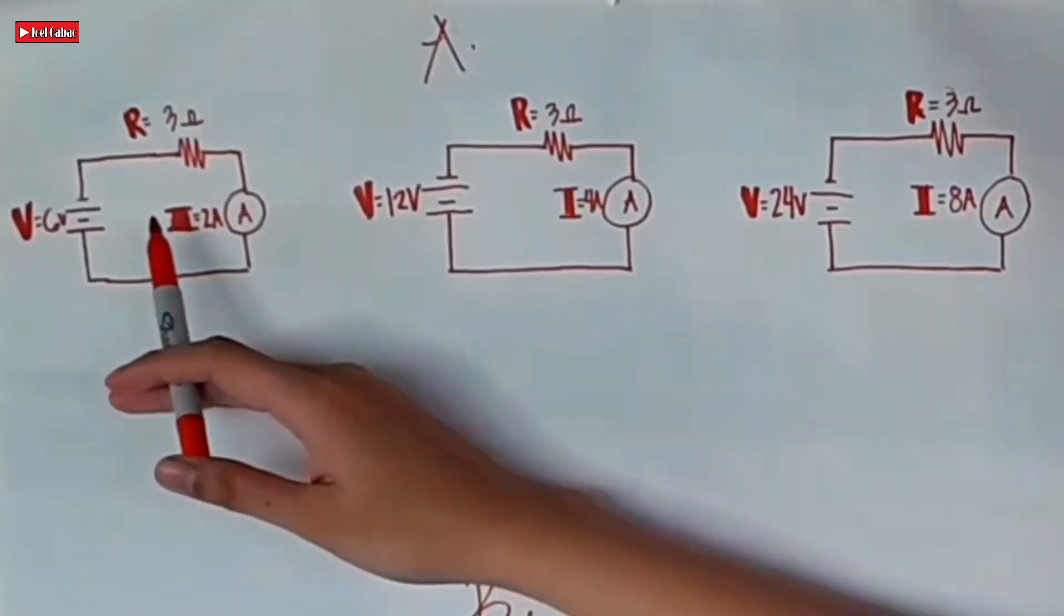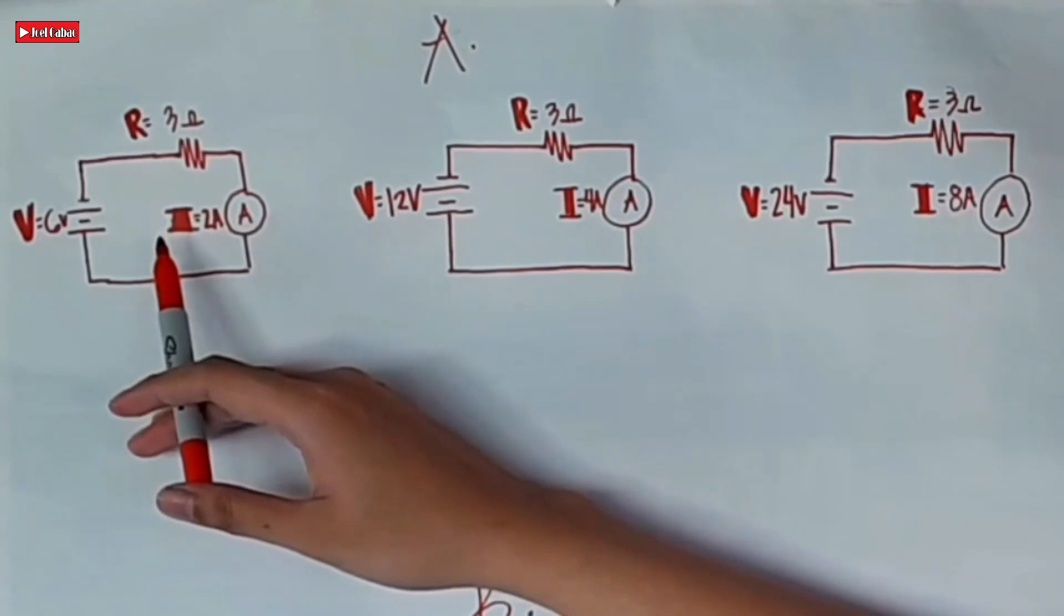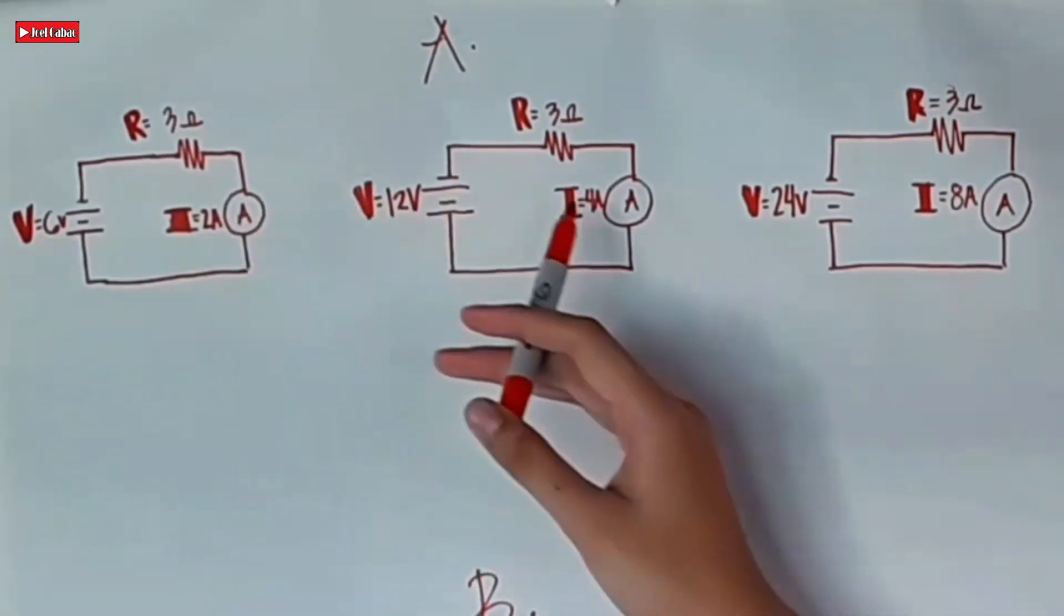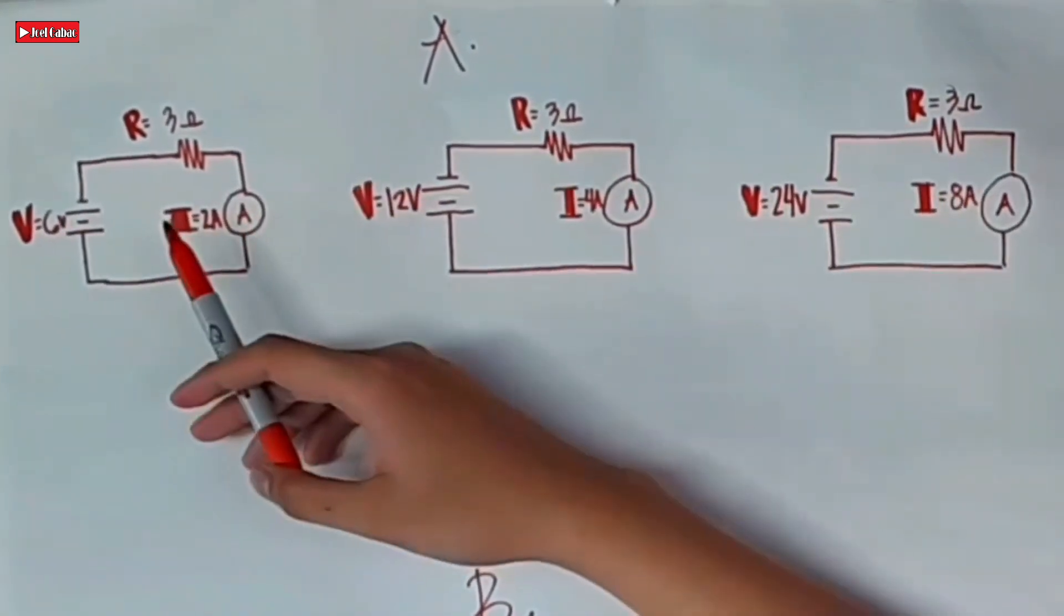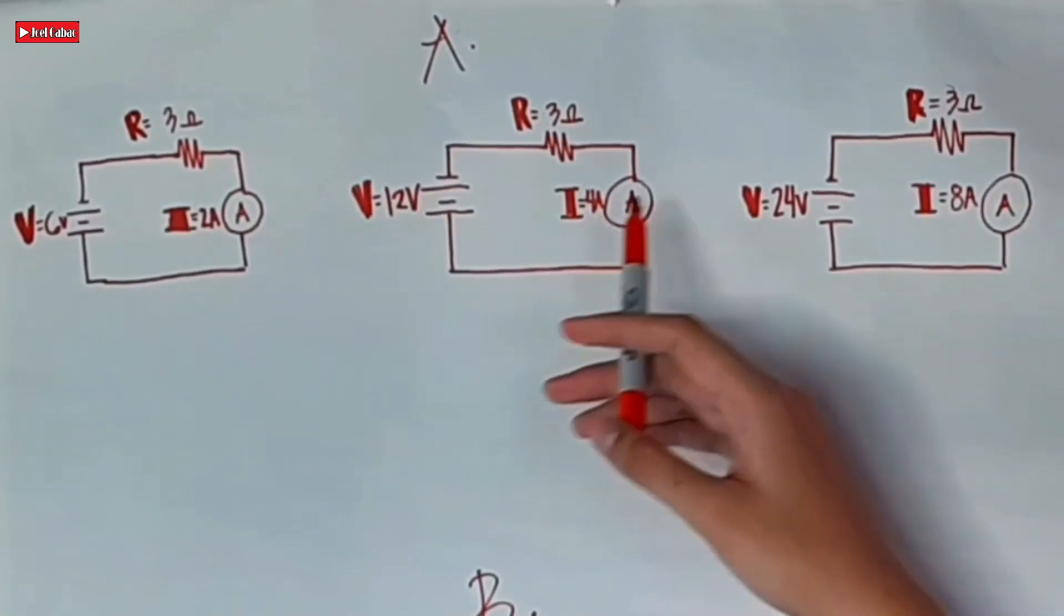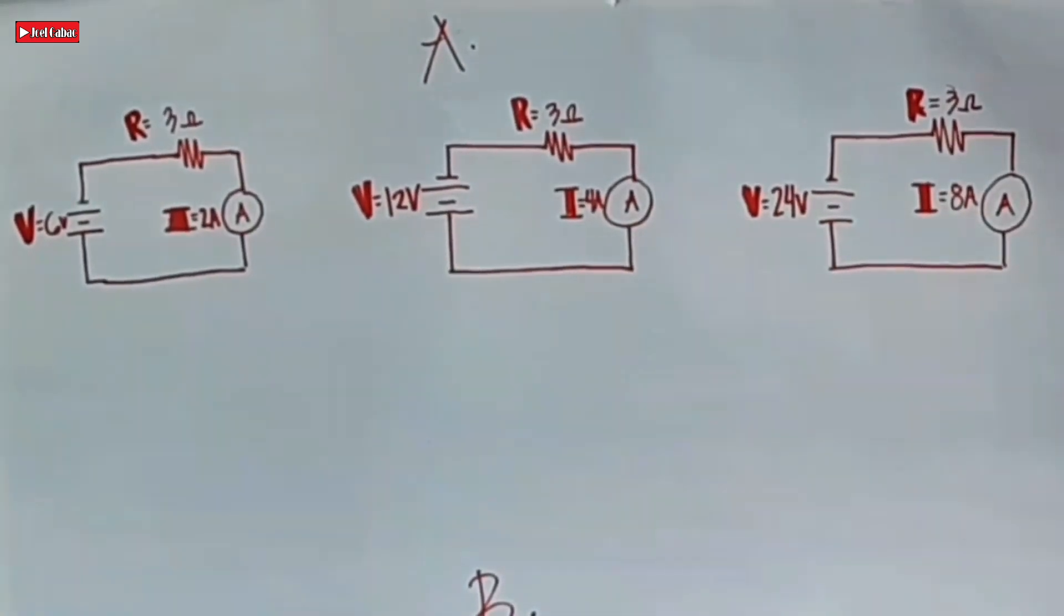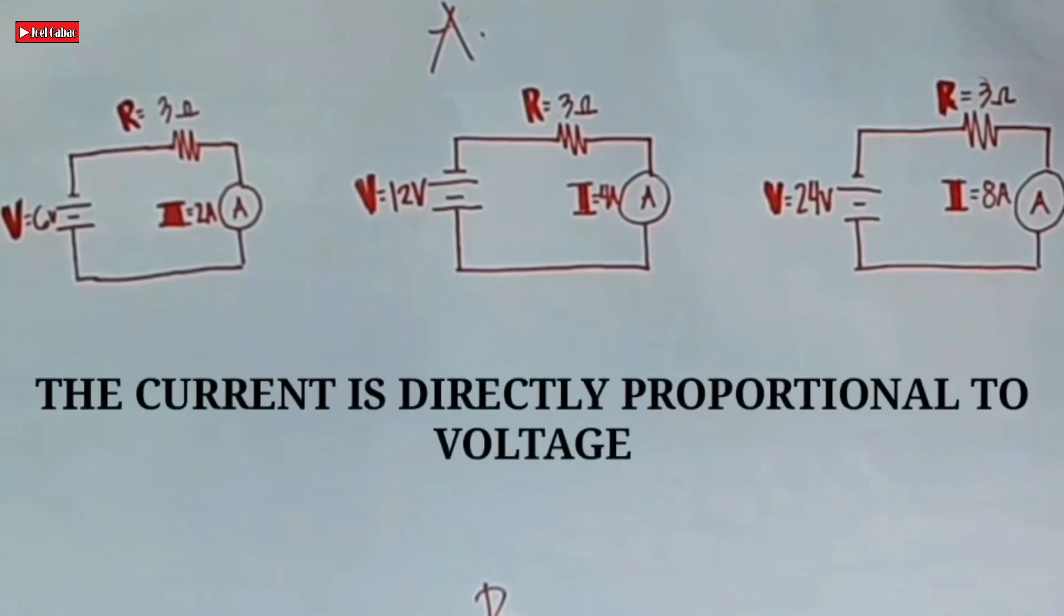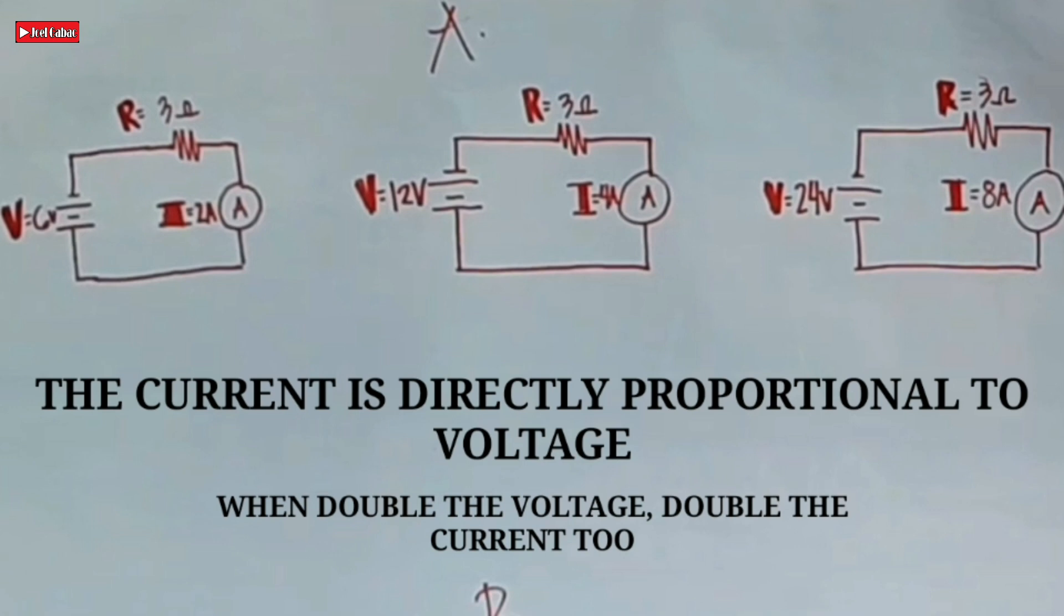The same with current: 2 amperes, 4 amperes, and 8 amperes. We can say that 2 amperes times 2 equals 4 amperes, 4 amperes times 2 equals 8. Therefore, the voltage and the current are directly proportional to each other. When you double the voltage, the current doubles too.